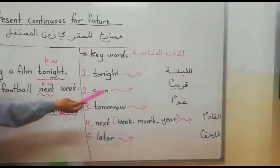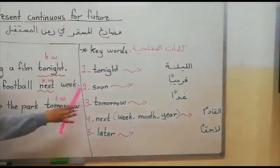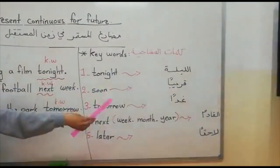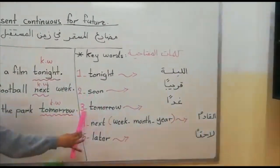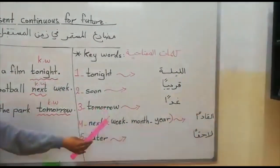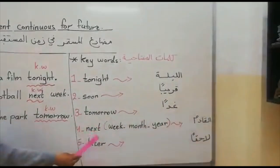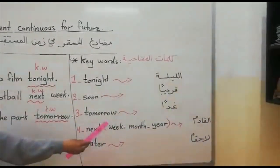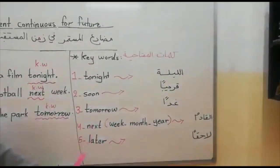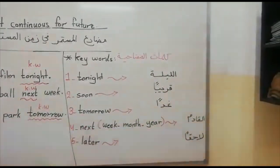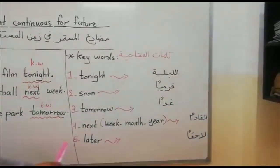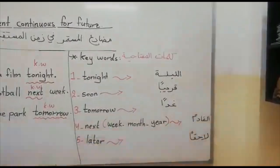The keywords for Present Continuous for Future are: Tonight, which means 'Layla'; Soon, which means 'Qariban'; Tomorrow, which means 'Ghadan'; Next Week, Month, or Year, which means 'Al-Qadim'; and Later, which means 'Fi ma Ba'd'.